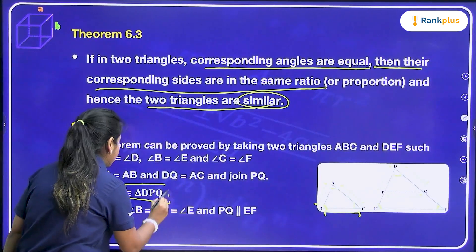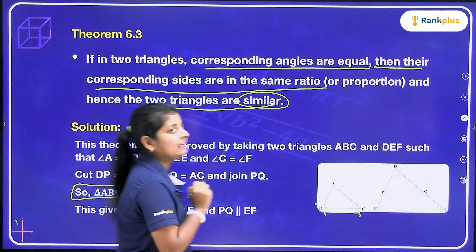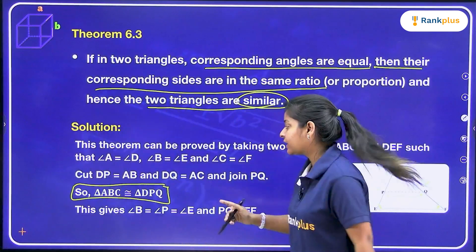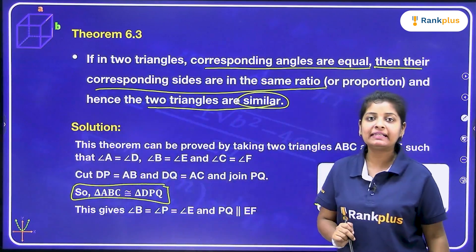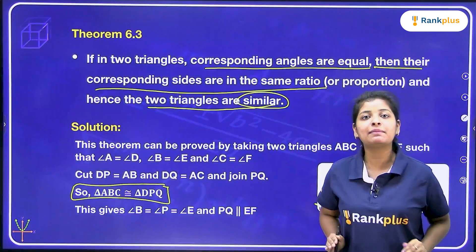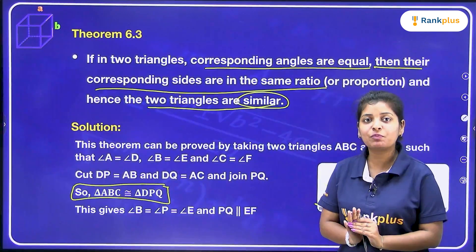So that's how we can prove it very easily. Triangle ABC is congruent to triangle DPQ by SSS criteria.